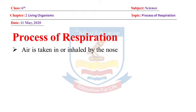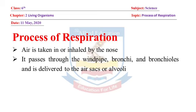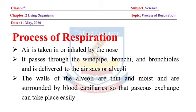Air is taken in or inhaled by the nose. Naak ke zariye ham hawa ko andar le jate hain, yani inhale karte hain. It passes through the windpipe, bronchi, and bronchioles, and is delivered to the air sacs or alveoli. The walls of the alveoli are thin and moist and are surrounded by blood capillaries so that gaseous exchange can take place easily.